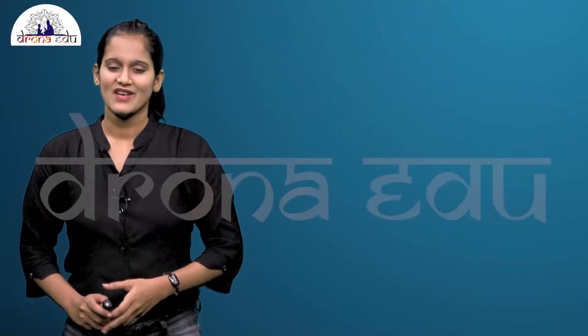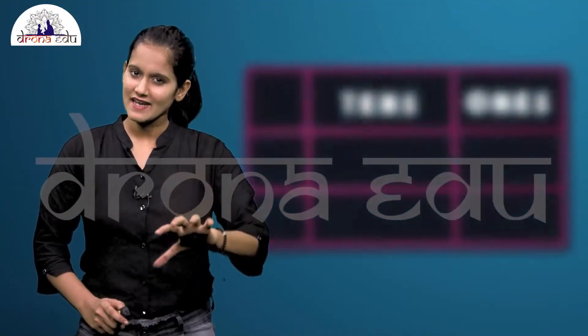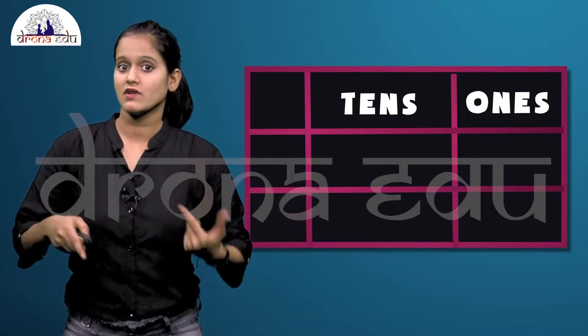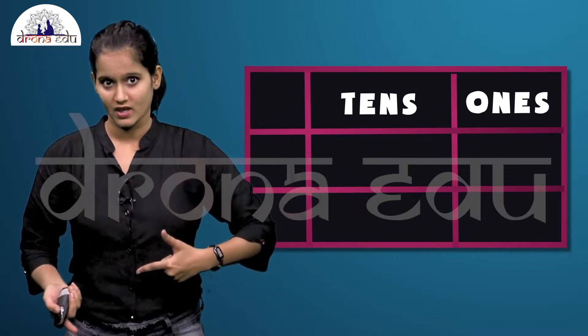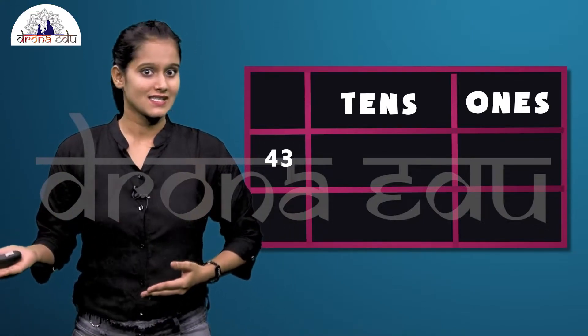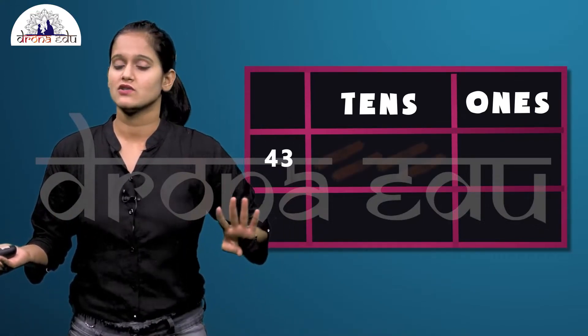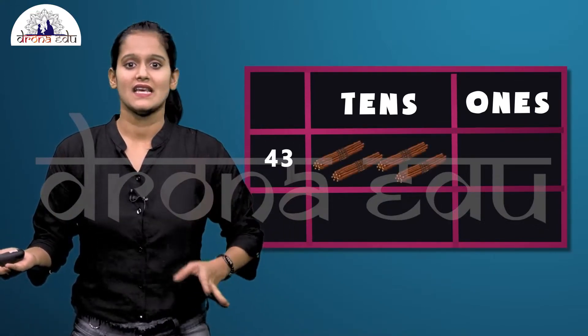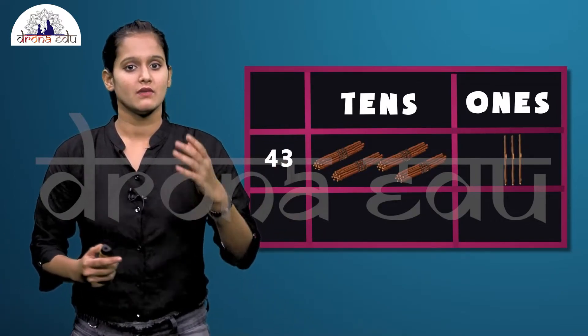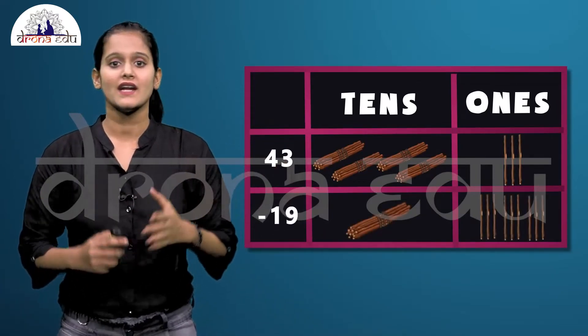This is subtraction without borrowing. Now let us do subtraction with borrowing using the same sticks example. Here we'll take 43 sticks — four bundles of 10 sticks and three individual sticks — and 19 sticks will be damaged.